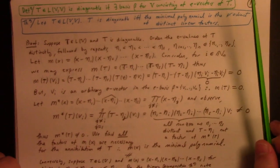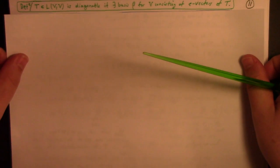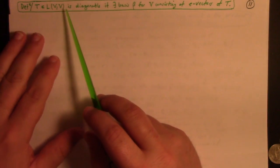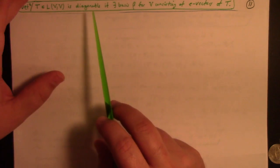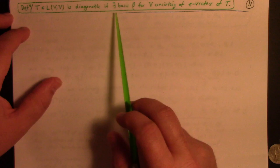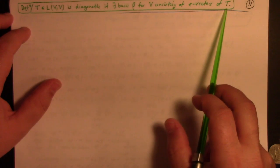All right, continuing on here. Definition: T, a linear transformation from V to V, is diagonalizable if there exists a basis beta for V consisting of eigenvectors of T.